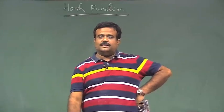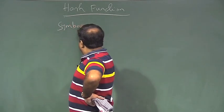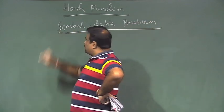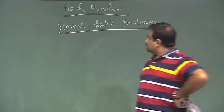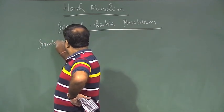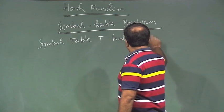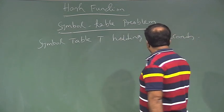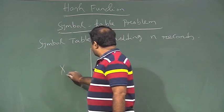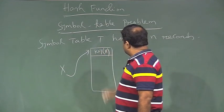We will start with the hash function and talk about hashing. The problem comes for what is called the symbol table problem. The symbol table T basically holds n records. A record has a few fields — x is the pointer pointing to the record — and among these fields there is one field referred to as the key of x, which is unique.